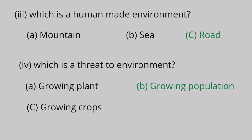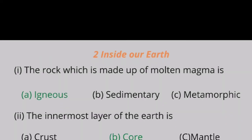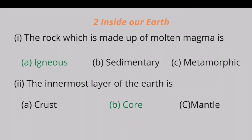Question 4: Which is a threat to environment? A. Growing plant, B. Growing population, C. Growing crops. Growing population is a threat to the environment.